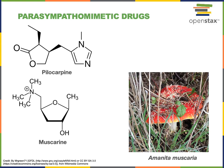A parasympathomimetic drug is a chemical that stimulates a parasympathetic response, so typically a parasympathomimetic drug is a muscarinic acetylcholine receptor agonist. For example, pilocarpine is a muscarinic acetylcholine receptor agonist that is used clinically to constrict the pupils.